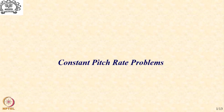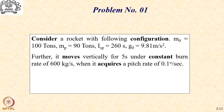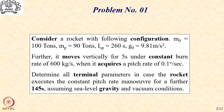Let us first consider the constant pitch rate problems. We consider a rocket with a lift-off mass of 100 tons carrying 90 tons of propellant with an ISP of 260 seconds. It moves vertically for 5 seconds at a constant burn rate of 600 kg/s, at which point a pitch kick is given and it acquires a pitch rate of 0.1 degree per second. We will determine all terminal parameters for the constant pitch rate manoeuvre from t = 5 seconds for a further 145 seconds, assuming sea level gravity and vacuum conditions.